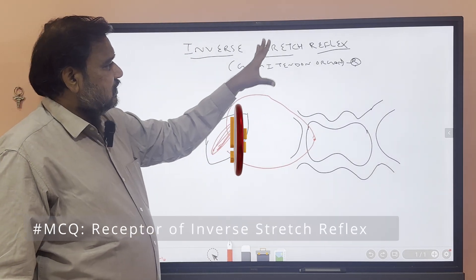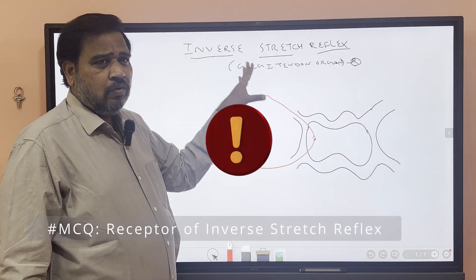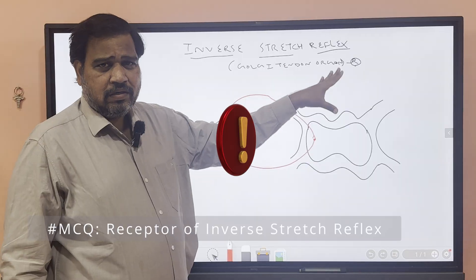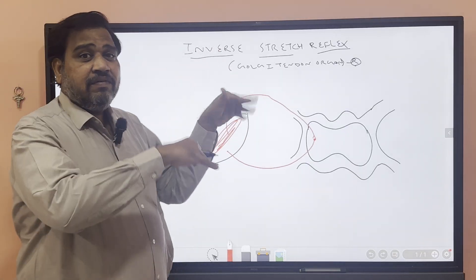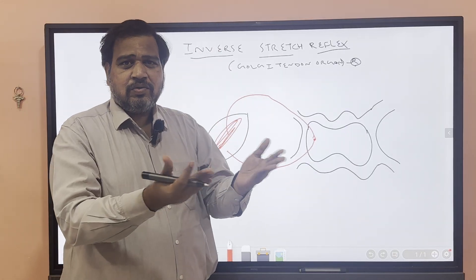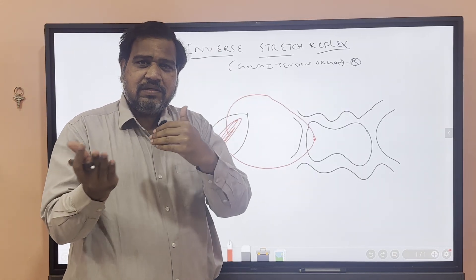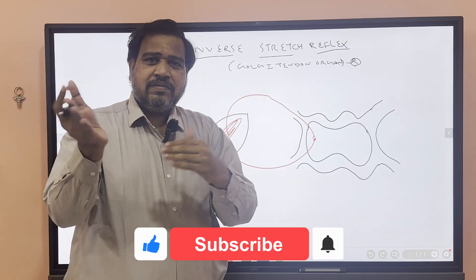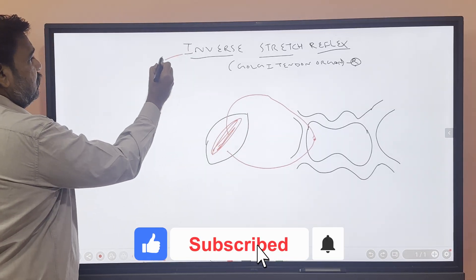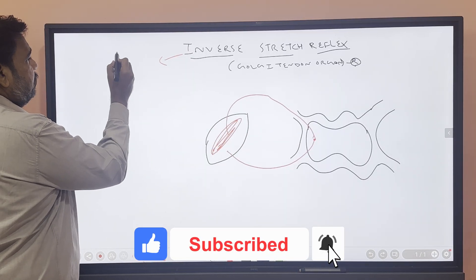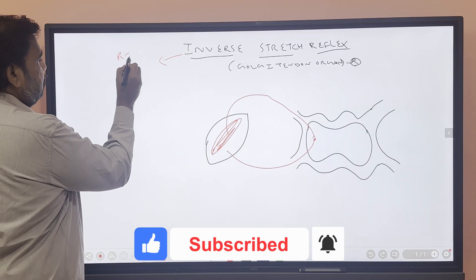The receptor for inverse stretch reflex is Golgi tendon organ, and as the name suggests, it is the inverse of stretch reflex. So the output is expected to be relaxation.